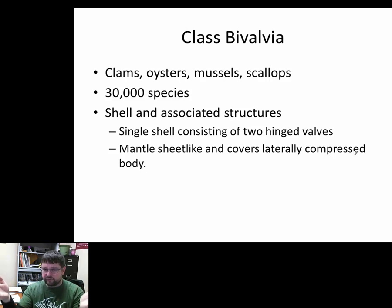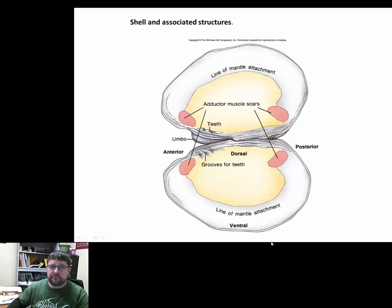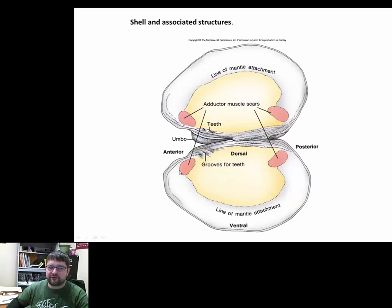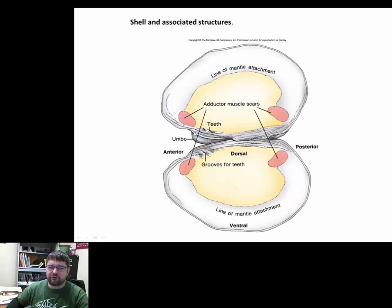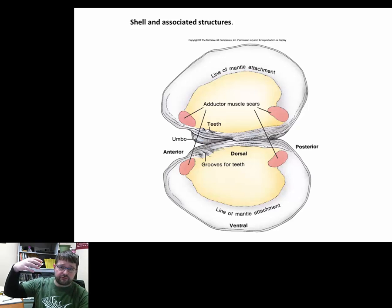Here's a better look. The mantle excretes a calcareous shell material. The opening and closing of the shell is controlled by anterior and posterior adductor muscles. To figure out which side is anterior and which is posterior, you find the umbo — the thicker part of the shell — which will be on the anterior side. Typically the umbo is also more prominent on the dorsal surface than the ventral surface.